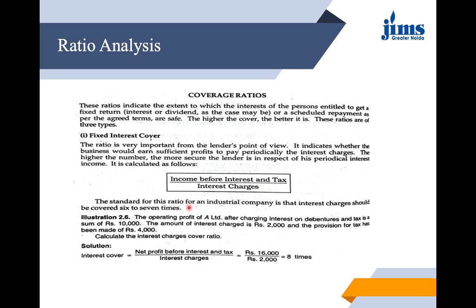Here we have a question: the operating profit of a limited company after charging interest on debentures and tax is given as ₹10,000. The amount of interest is ₹2,000 and provision for tax is ₹4,000. We need to calculate the interest coverage ratio. The profit given is after charging interest and tax, so we add back ₹2,000 interest and ₹4,000 tax to get PBIT of ₹16,000.